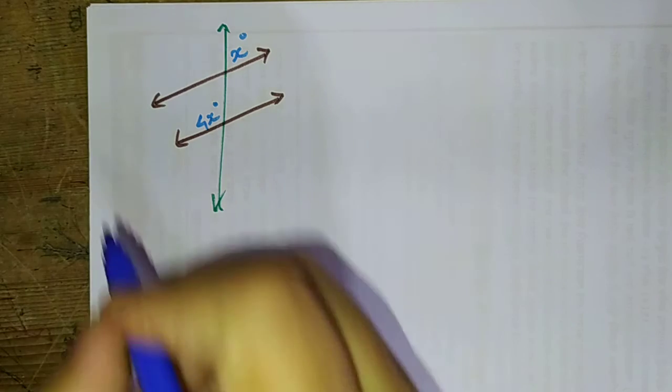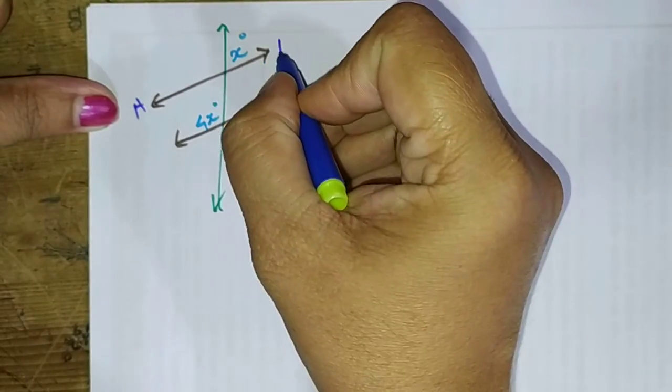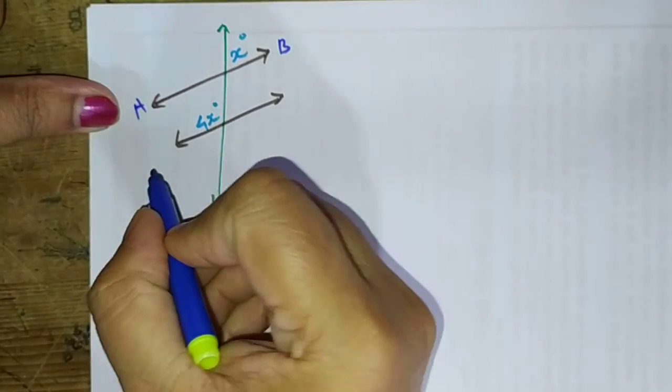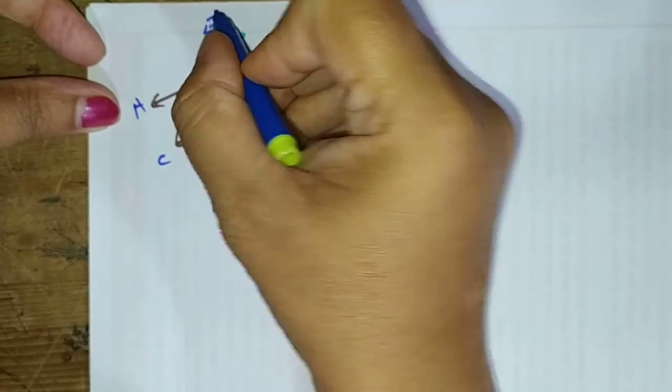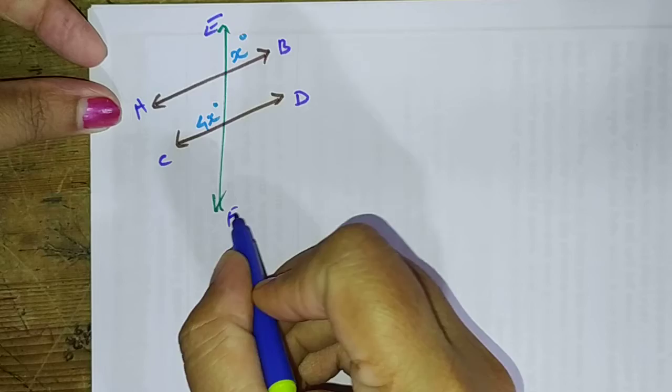Now if it is named as AB is the first line, CD is the second line, and EF is the transversal.